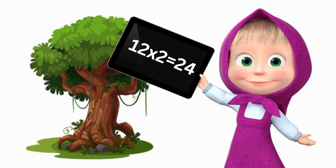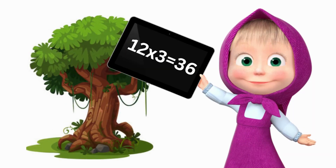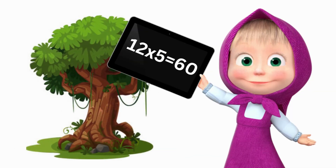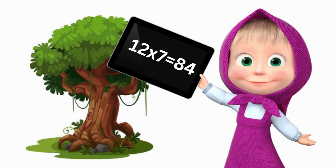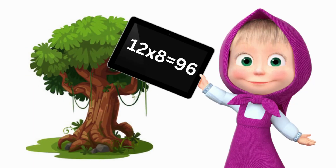12 twos are 24. 12 threes are 36. 12 fours are 48. 12 fives are 60. 12 sixes are 72. 12 sevens are 84. 12 eights are 96.